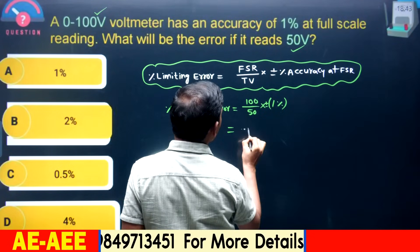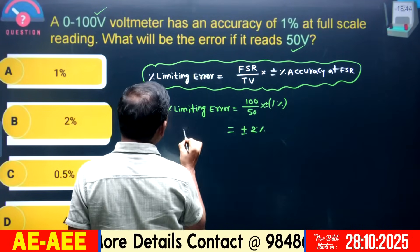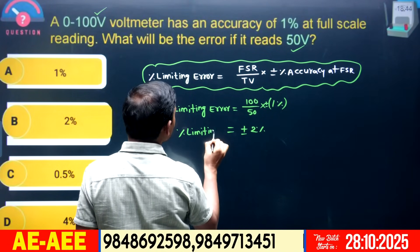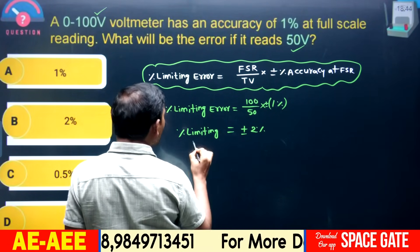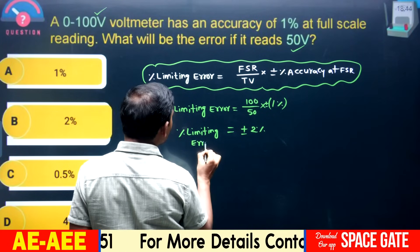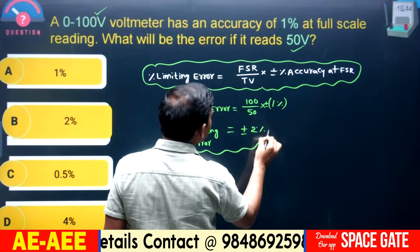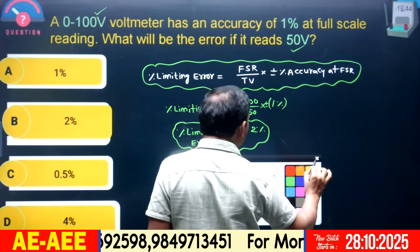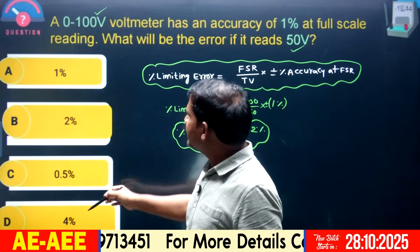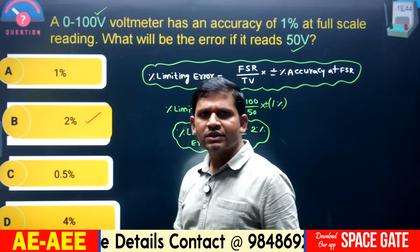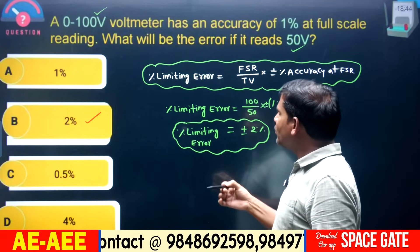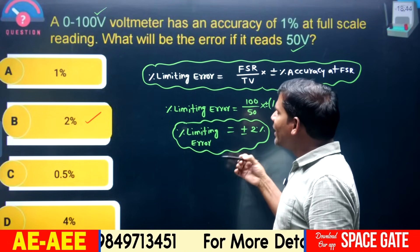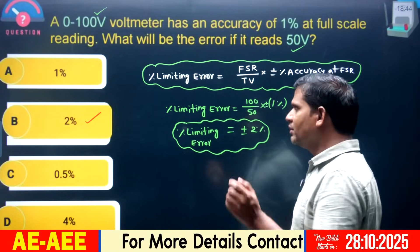The result is plus or minus 2 percent. The error at 50 volts measurement is ±2%. The percentage limiting error equals ±2%. In the given options, 2 percent is the correct option — that is option B is the right answer. This question relates to limiting error calculation and basic error analysis.